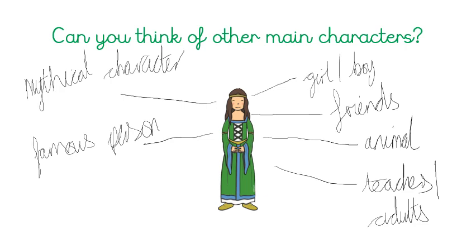So our main character could be a girl or a boy, it could be our friends, it could be an animal, teachers or adults — like parents for example — it could be a mythical character or a famous person.